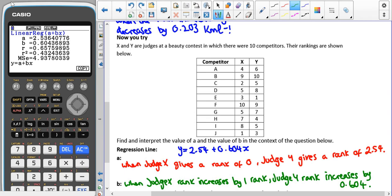So hopefully you've got the regression line of y equals 2.54 plus 0.604x. And this context here isn't the best, but it's just practicing how we could rephrase it. You don't have to use word for word the sentences that we've given at the top. So here we have when judge x gives a rank of 0, judge y gives a rank of 2.54. So that's our interpretation of a. And for our interpretation of b, we have when judge x's rank increases by one rank, judge y rank increases by 0.604.